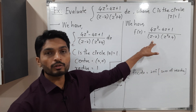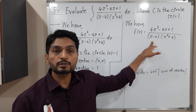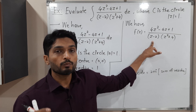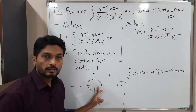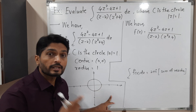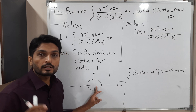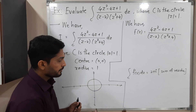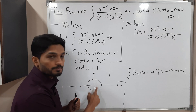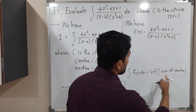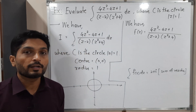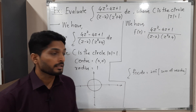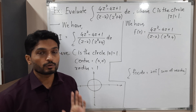For that, first we find the singular points of the given function — points where the function is not analytic, or generally where the denominator is 0. We then check whether those points are lying inside or outside the circle. If a point lies outside the circle, no need to consider it. We should consider only points lying inside the circle. For those interior points, we find the residues, take their sum, multiply by 2πi, and that gives the value of the integration.